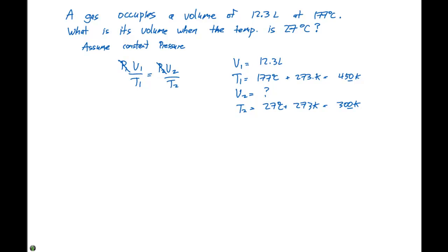If we want to rearrange this expression to solve for V2, we can say that V2 is going to equal V1 times T2 divided by T1. So V2 is going to equal 12.3 liters times 300 Kelvin divided by 450 Kelvin.